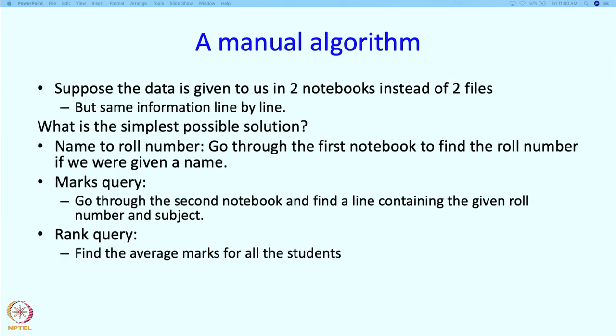For the rank query, we have to find the average marks for each student. For every student, we want to find an average over all the subjects in which the student has marks. So if a student has 90 marks in physics and 80 marks in mathematics, then there will be two lines in the second notebook corresponding to that student. We have to find those two lines and take the average, which in this case is going to be 85. For every student, we must look at the subjects he or she has taken and find the average marks obtained.